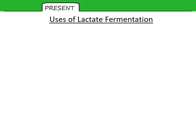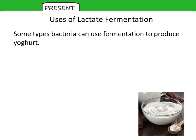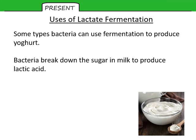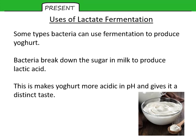Lactate fermentation also has uses in food manufacturing. Some types of bacteria use anaerobic respiration to break down glucose into lactic acid, and these can be used to produce yogurt. Bacteria break down the sugar or lactose in milk to produce lactic acid, which makes the yogurt more acidic, gives it a distinct taste, and makes it thicker. This is more noticeable in plain yogurts than Greek yogurts. This process can also be used to make cheese.